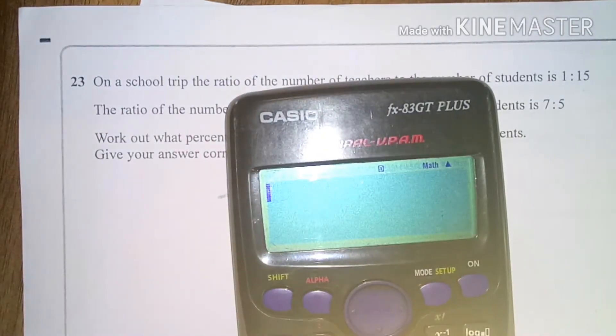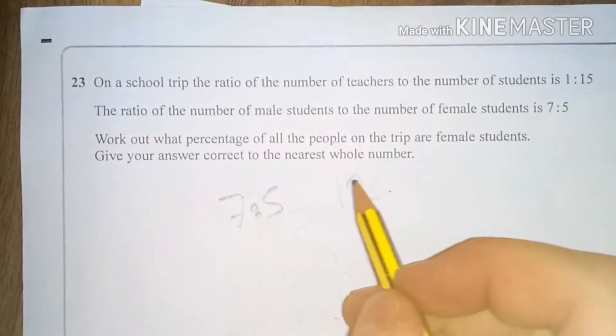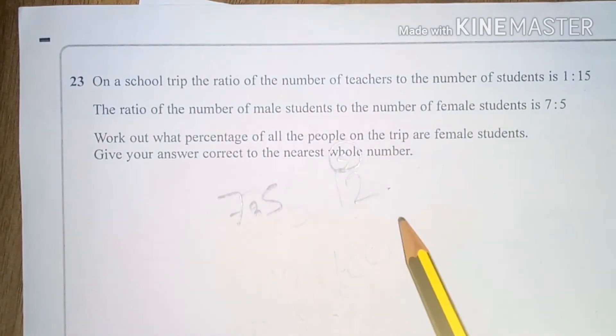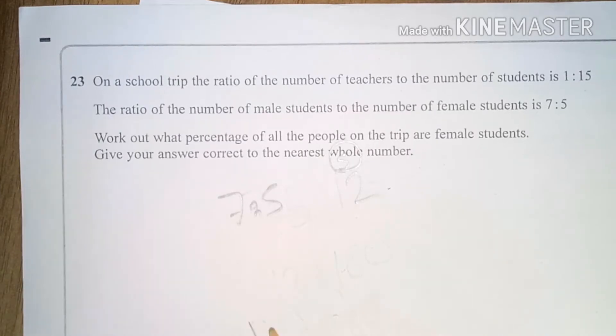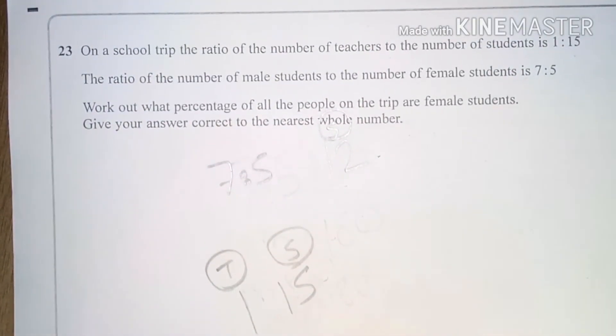if I add them up, 7 plus 5, I get 12, and 12 represents all of my students. Now we know that it's 1 to 15, and this is teachers to students. If I can make these two students to the same number, then I can write this all as one ratio. So what I'm going to do is I'm